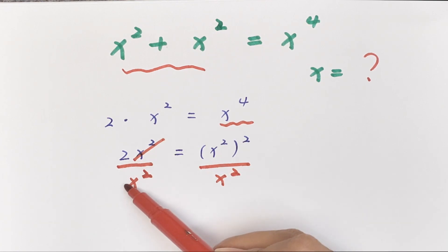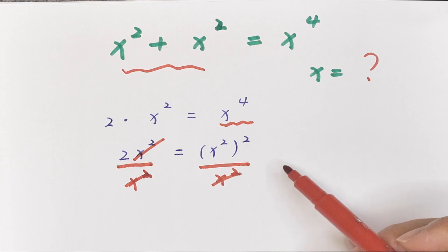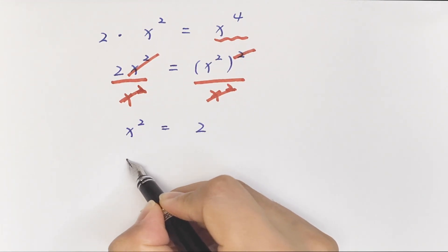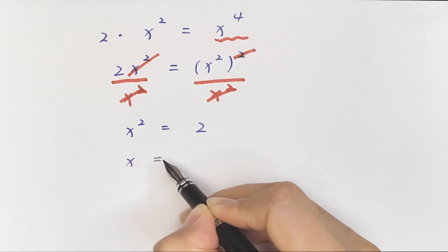This will cancel with this and this will cancel with this, so x squared equals 2.